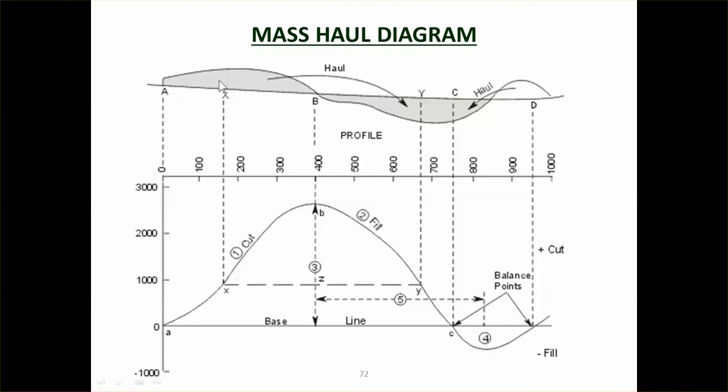So here's what a mass haul diagram looks like. There's the long section at the top there and there's the mass haul diagram. So you can see we're doing cut, cut, cut. So this whole area here from A to B needs to be cut, so it's increasing. And then cumulative volume starts to go down as we're starting to get into fill. So it's dropping. Between 0 and C we have a balanced cut to fill.